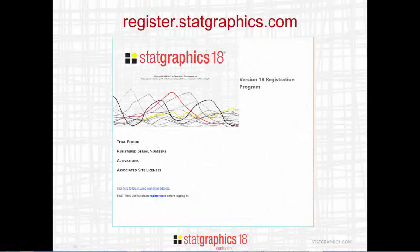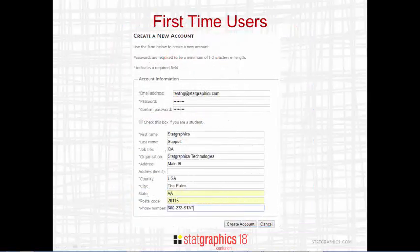To start the registration process, open up a web browser and go to register.statgraphics.com. This opens up a web page containing the version 18 registration program. Go to the bottom of the page where it says "First Time Users" and click on the link labeled "Register Here."